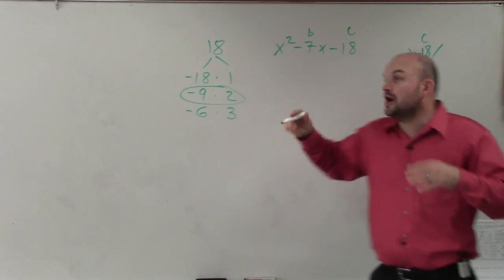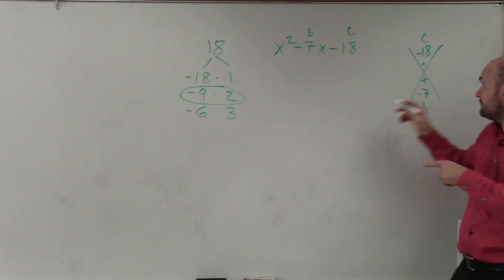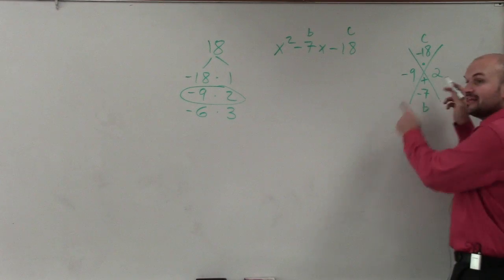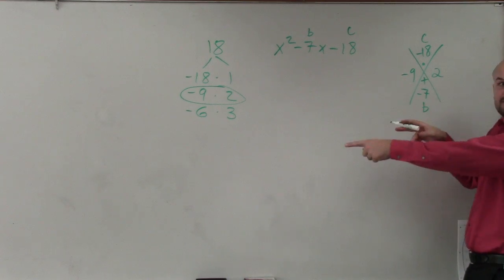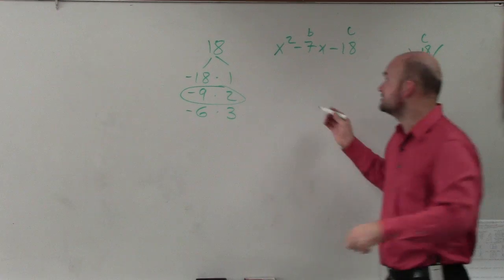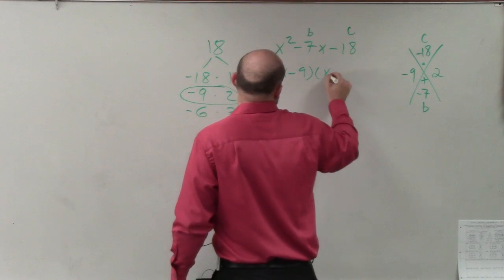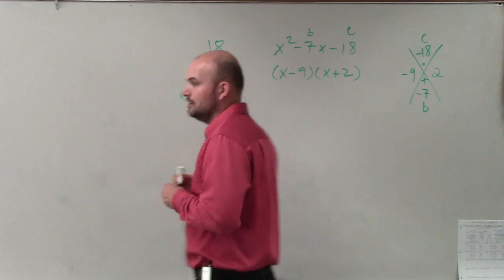So in this case, if you remember, whatever your factors are, negative 9 and 2, we remember that those two numbers are in your factored form, right? Without even putting them in the box. So I can write my factored form as x minus 9 times x plus 2. And then that would be done.